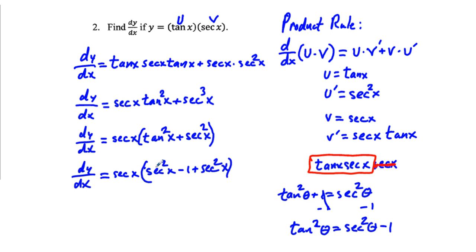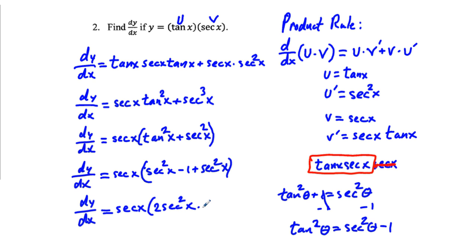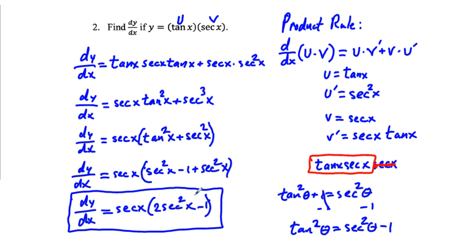Combining terms, dy/dx equals secant x times the quantity 2 secant squared x minus 1. If we distribute, we get 2 secant cubed x minus secant x, but we'll leave it in factored form. For multiple choice problems like on an AP test, it might look for this simplified version, but the earlier factored form would also be sufficient.